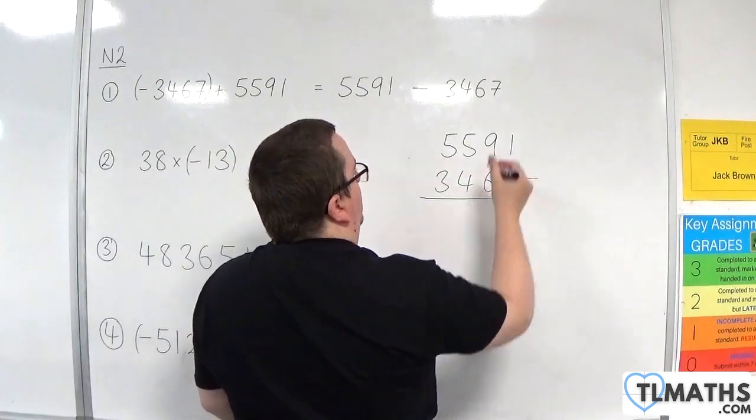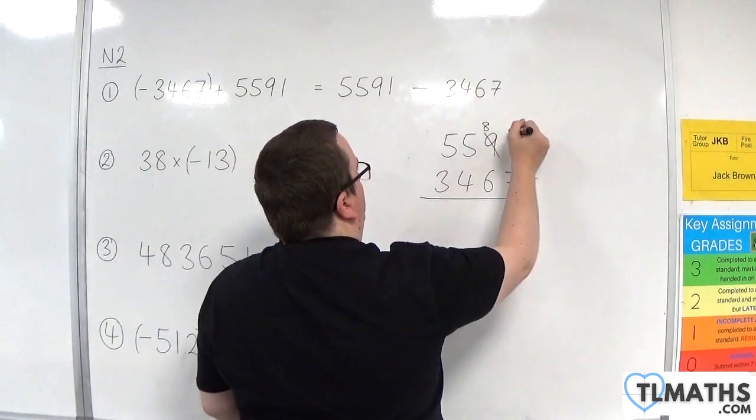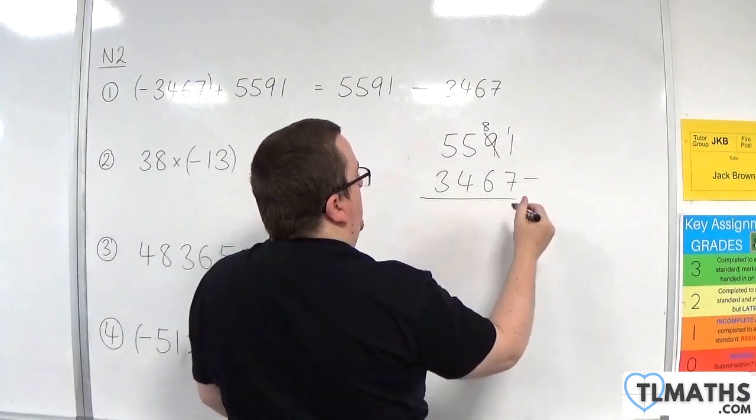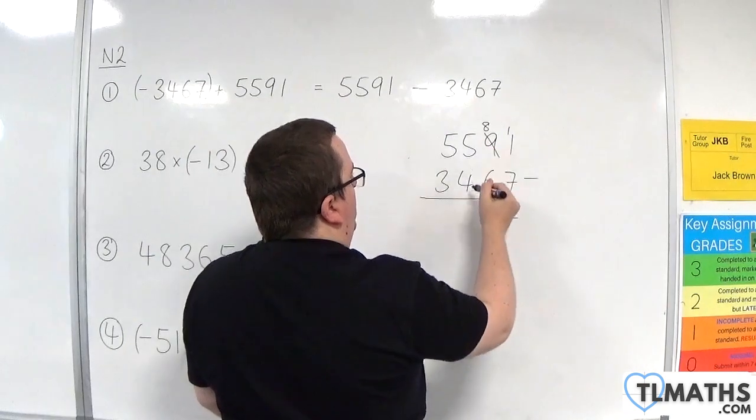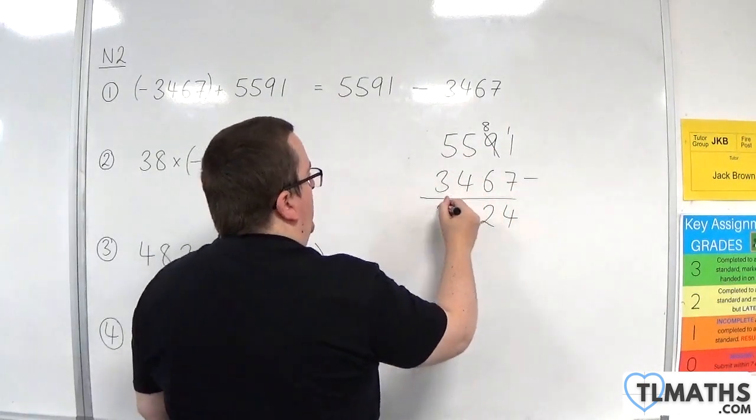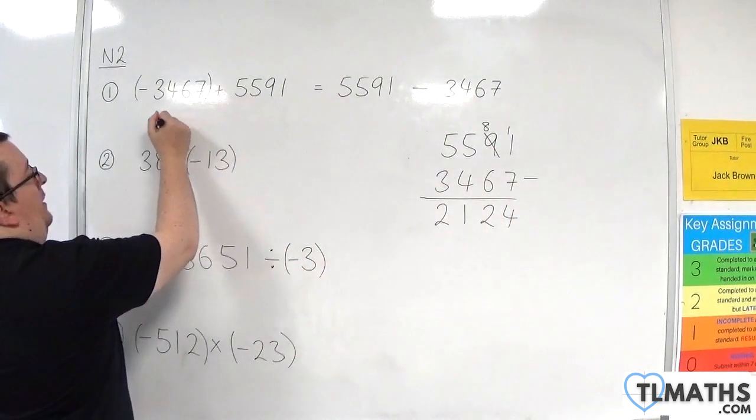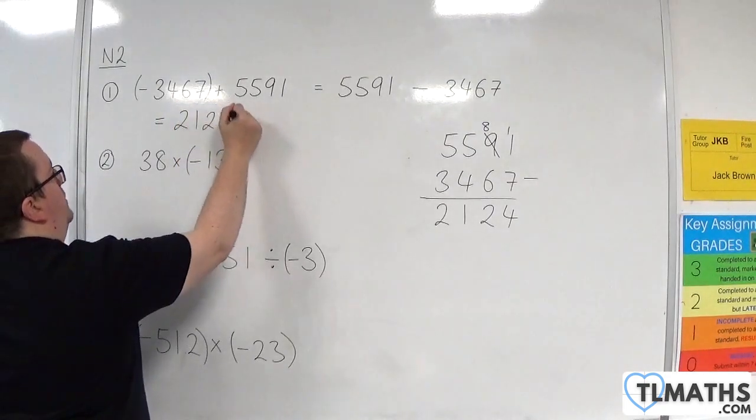1 take away 7, I can't do, so I'm going to borrow 1 from the 9. So we have 11 take away 7, which is 4. 8 take away 6 is 2. 5 take away 4 is 1. 5 take away 3 is 2. So this is 2,124.